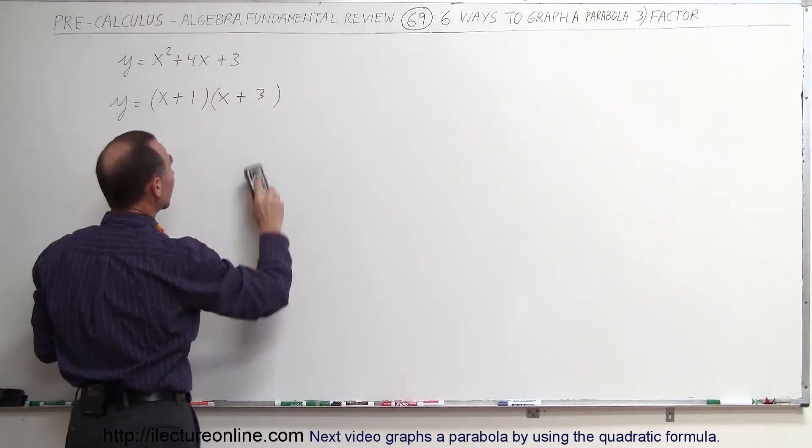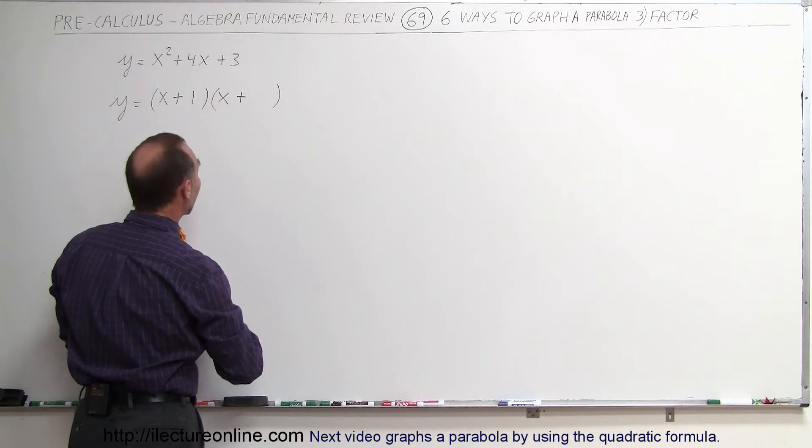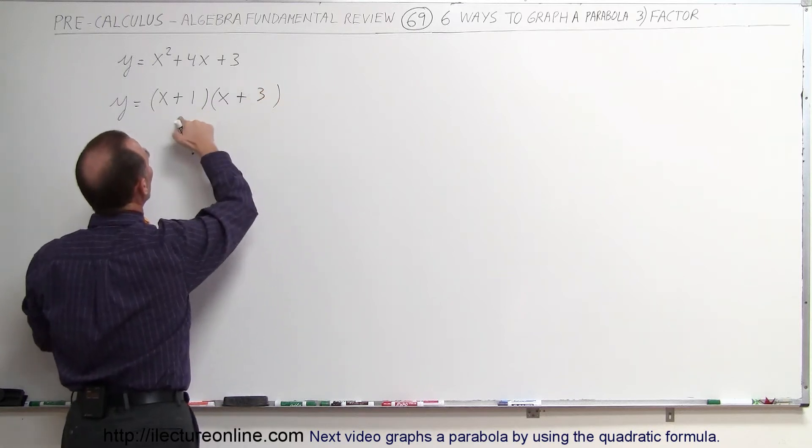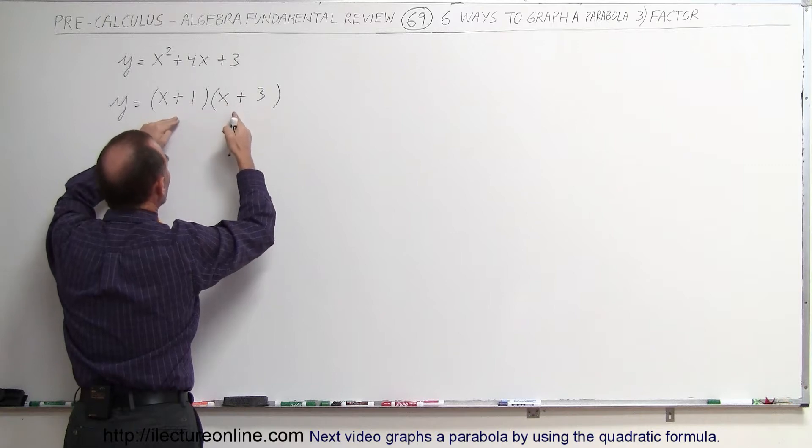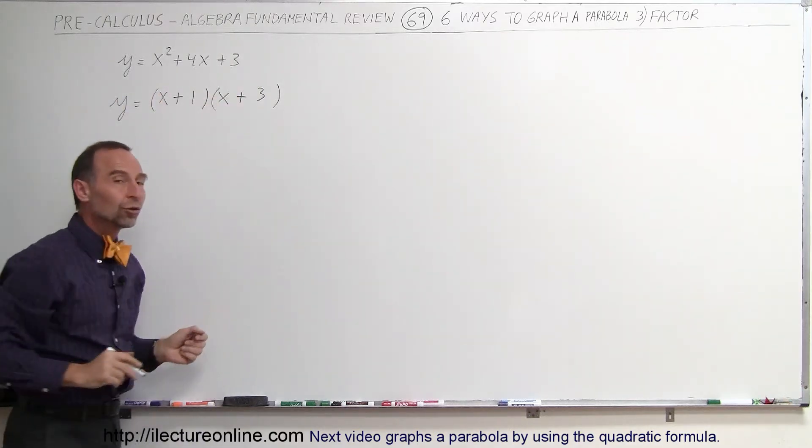And then we add them together. That's not a good-looking three here. And then we add the two numbers together, you get four. So 3x plus 1x gives you 4x. So this is the exact representation of the original problem.